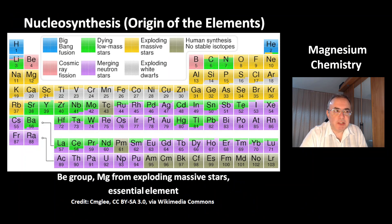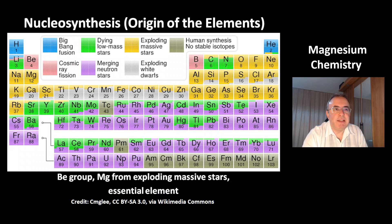This is a picture of the periodic table and of the nucleosynthesis of all the chemical elements. Magnesium is a member of the beryllium group, and its origin is from exploding massive stars.